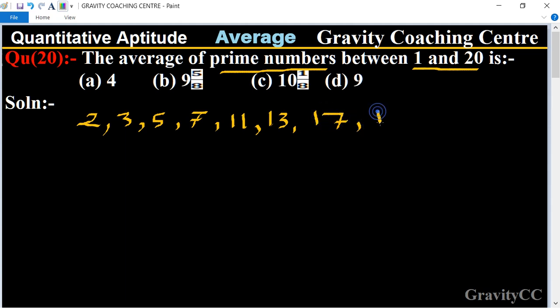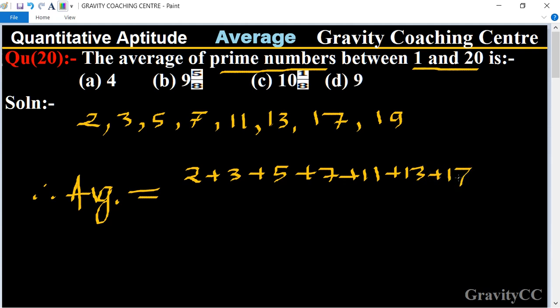17 and 19. So therefore average equals 2 plus 3 plus 5 plus 7 plus 11 plus 13 plus 17 plus 19 upon - so there is 1, 2, 3, 4, 5, 6, 7, 8 - eight numbers. So equals to the sum